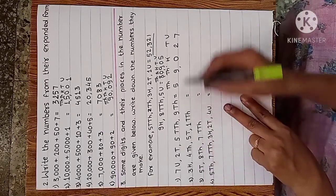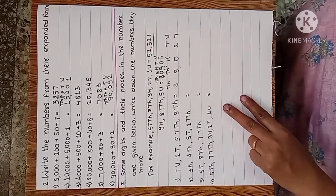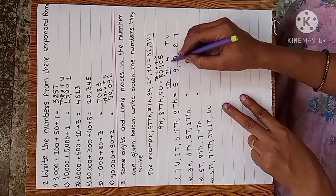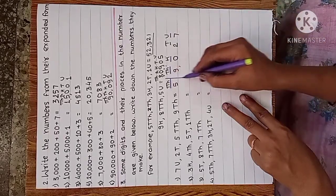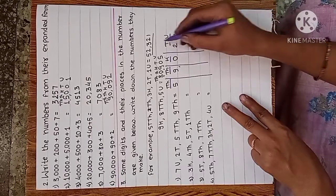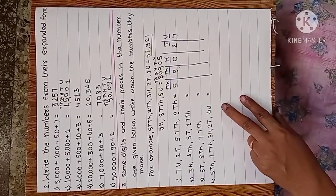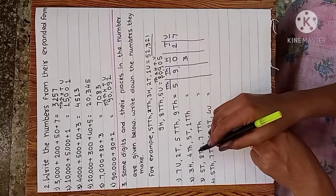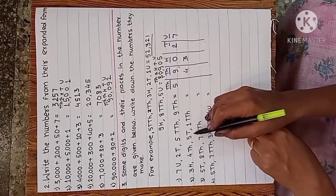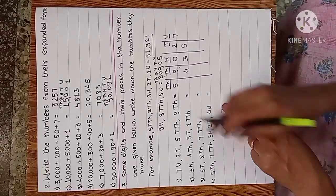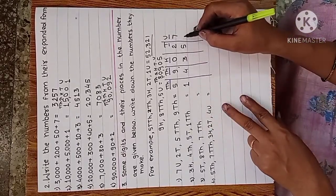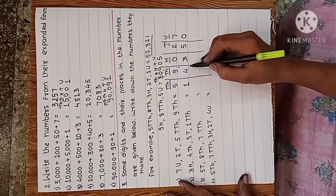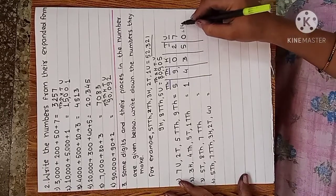Similarly, next number: 300 — see the hundreds column. 4000 — write in thousands column. 5 tens — write 5 in tens column. 1 ten-thousand. Units not given means we write zero. The number is 14,350.